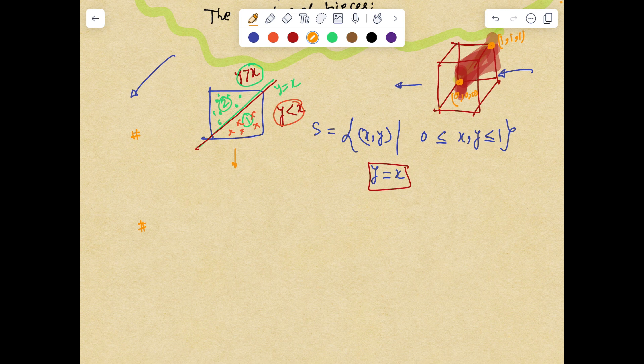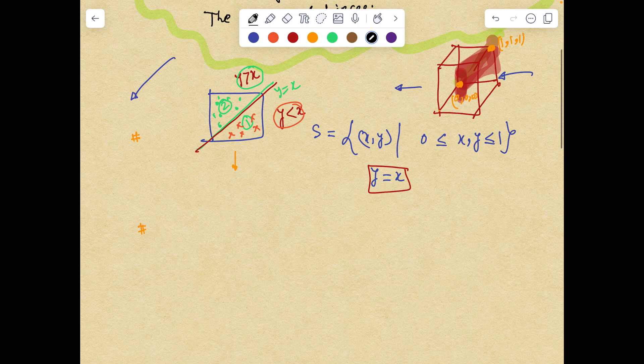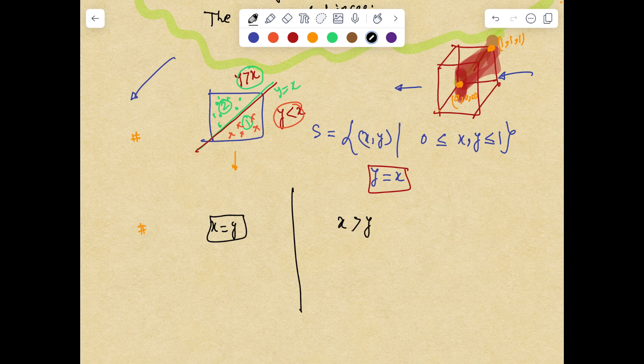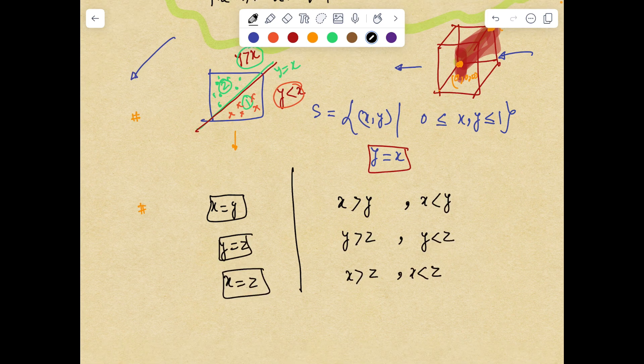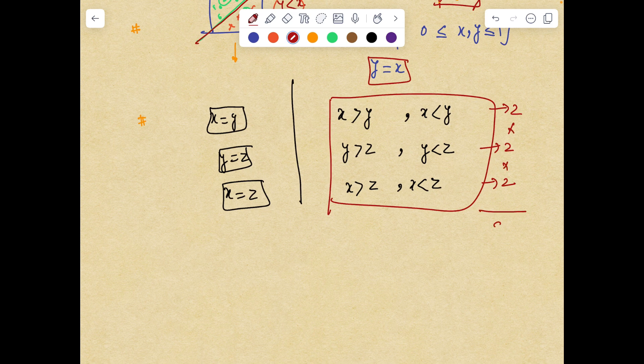So let us try to mimic this idea and solve this 3D problem. Let us say if I have a plane x equals y, what are the possibilities? This plane will divide the region into two parts: either a region where x will be greater than y or x less than y. So in total we have two regions over here, two regions over here, and two regions over here. So in total by fundamental rule of counting we can say we have eight regions. Question is, are all these eight regions valid?